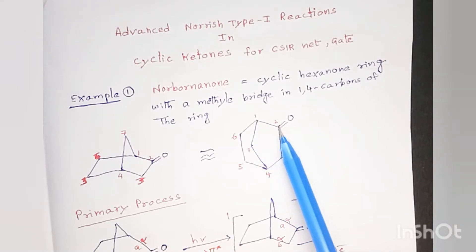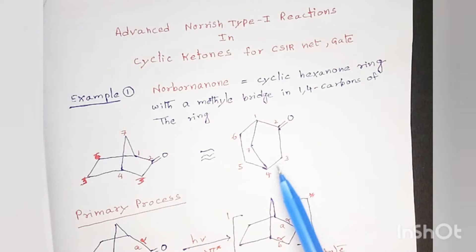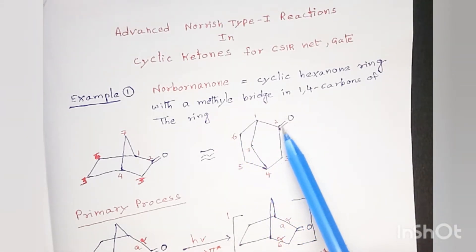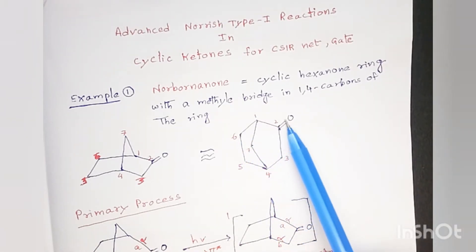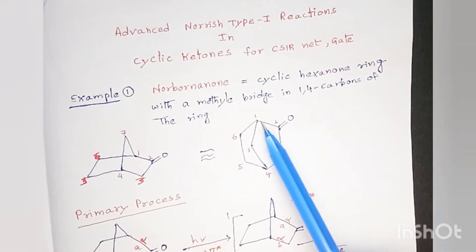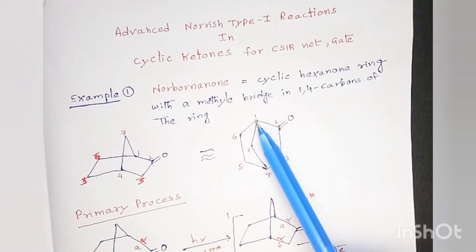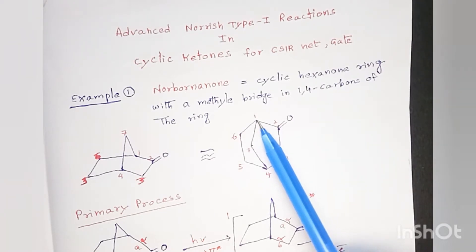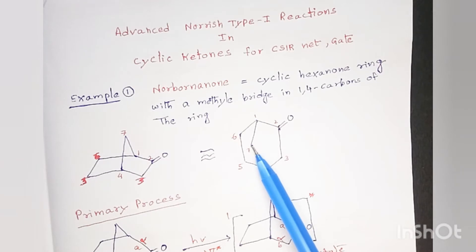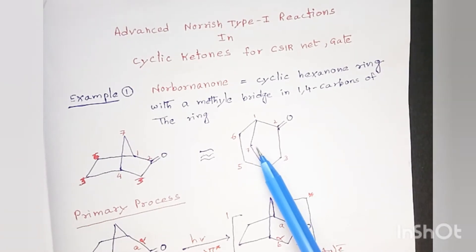This is hexanone with carbons 1, 2, 3, 4, 5, 6. This is the carbonyl, so it is called hexanone. It has a methyl bridge between the first carbon and the fourth carbon of the ring. This is the seventh carbon. So this is Norbornenone.